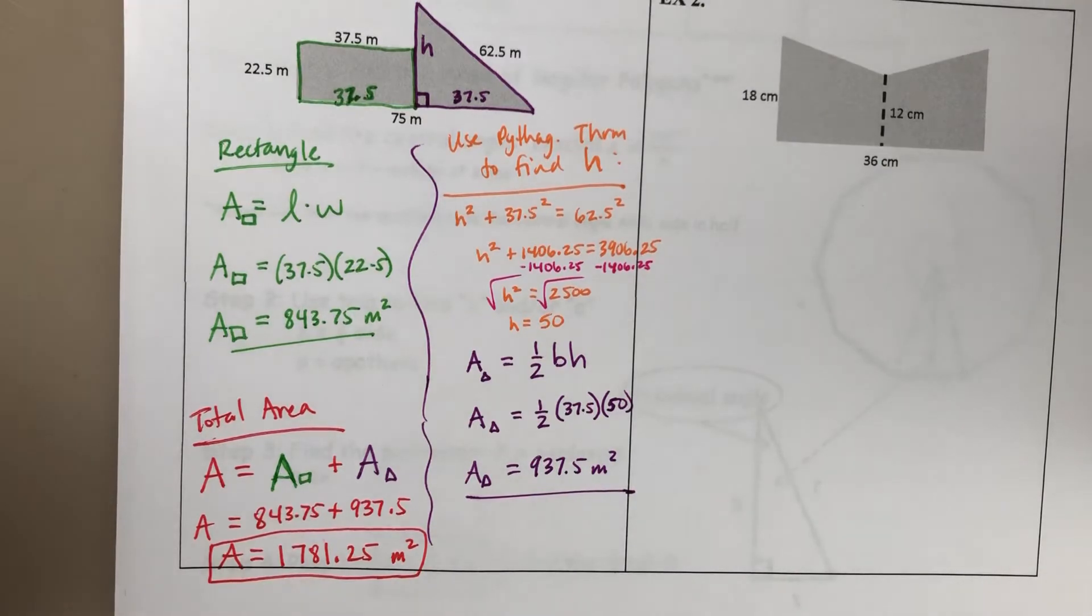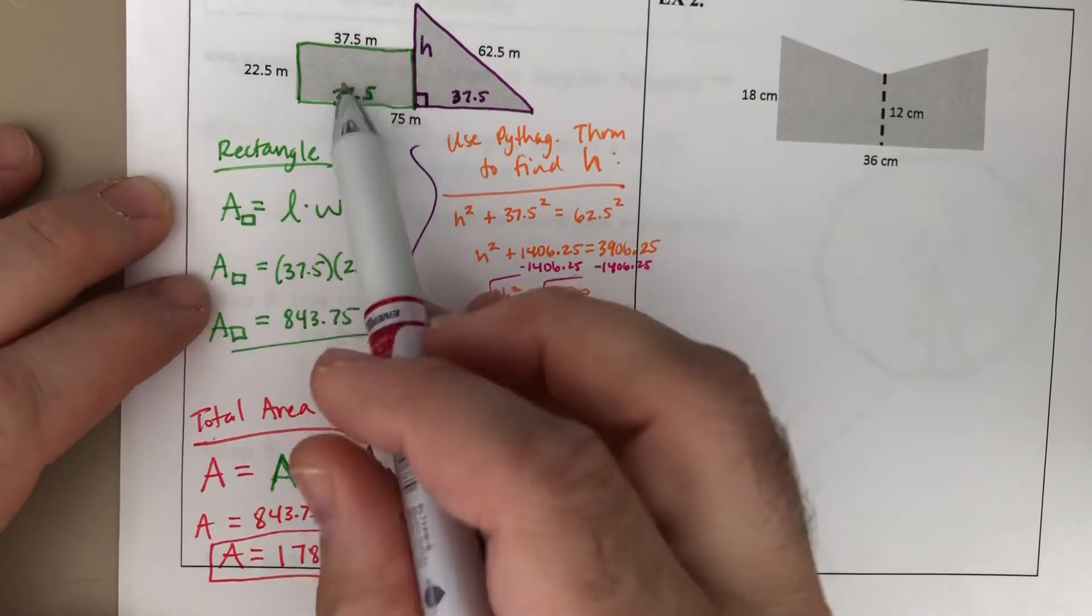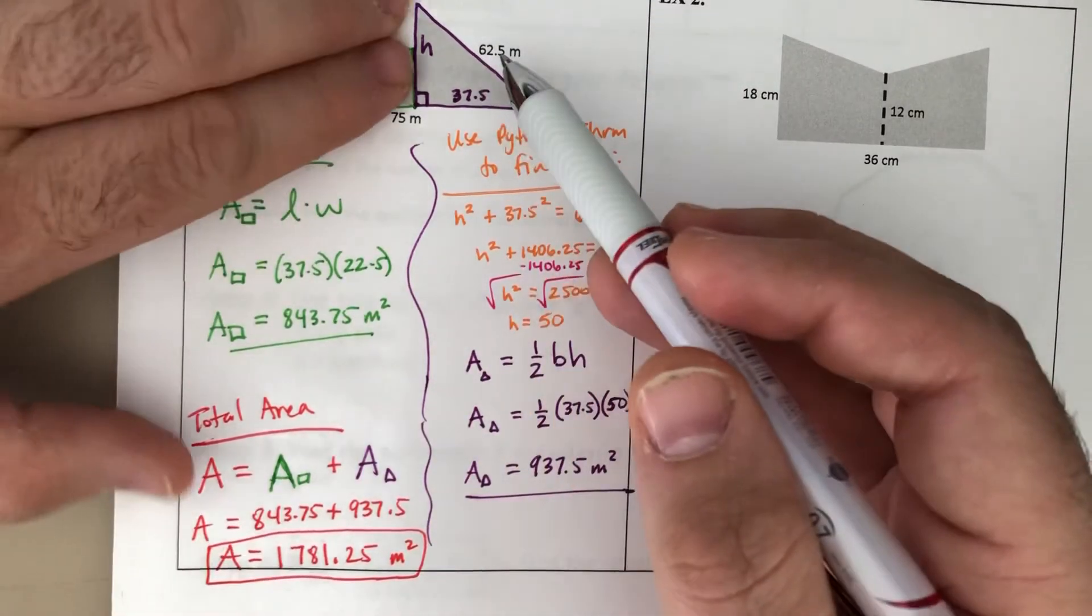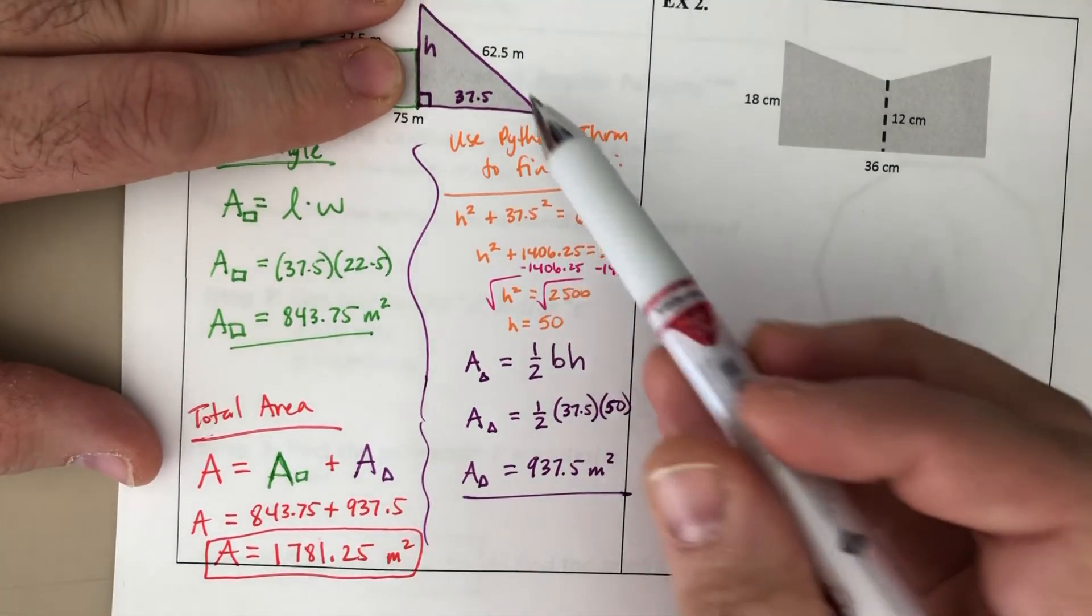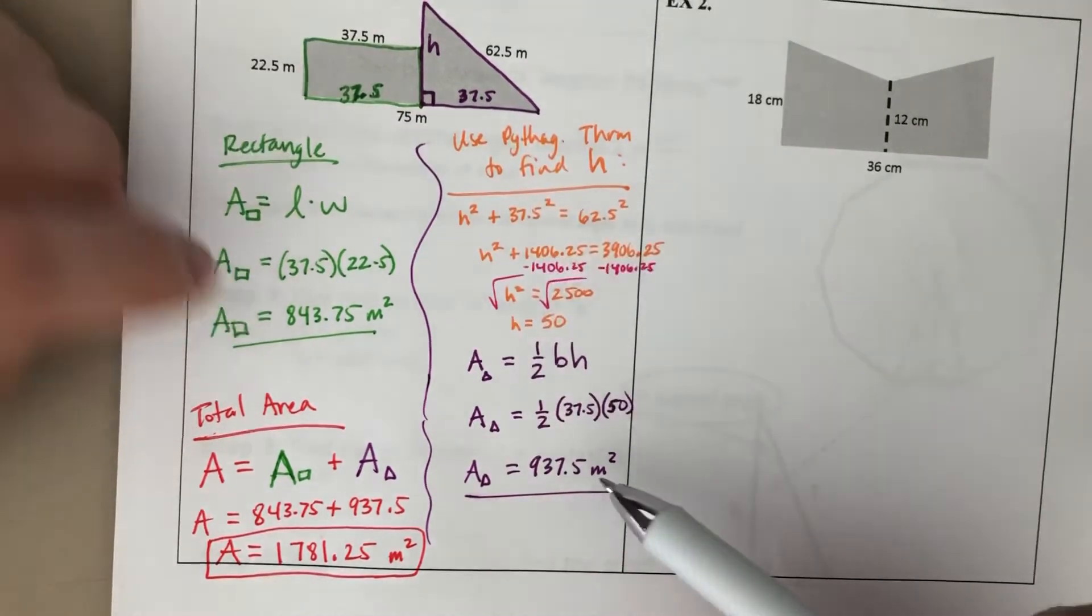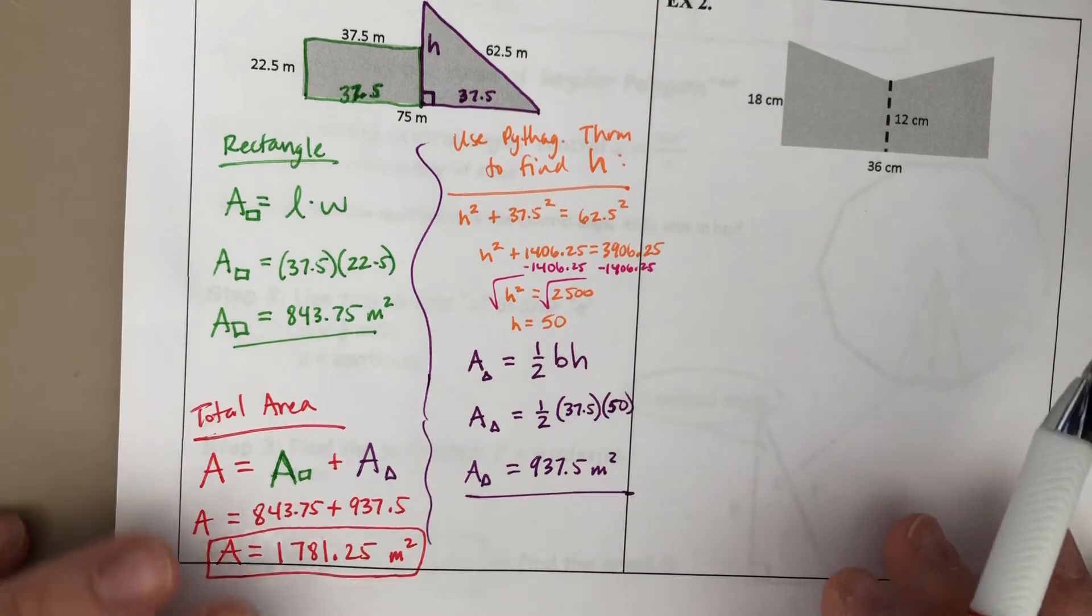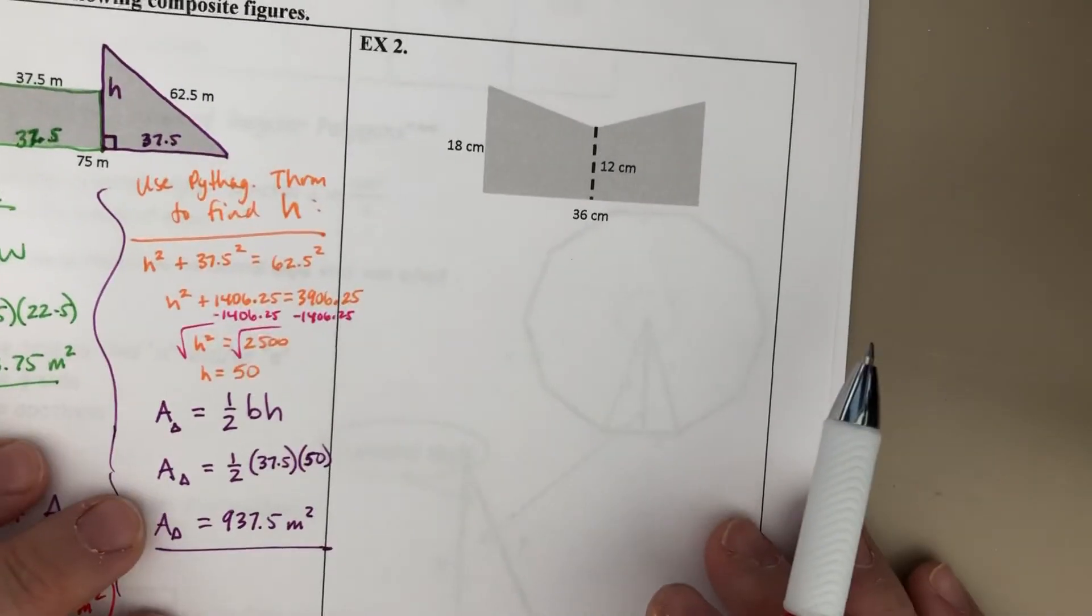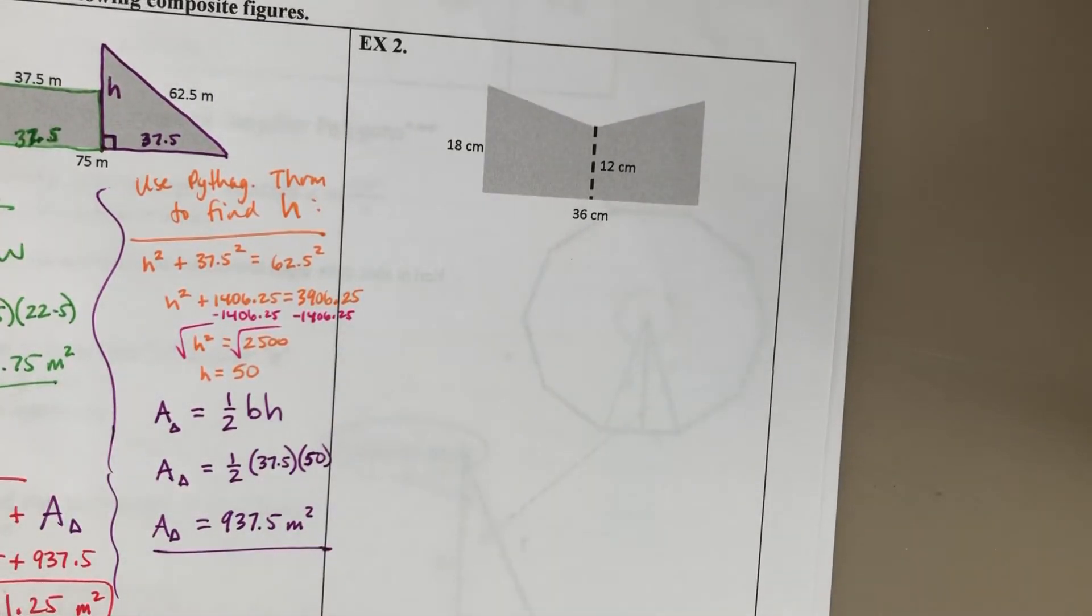So not too bad there. Again, the rectangle is nice and easy. The triangle on its own is identical to a problem we did in a previous time. And so really, it's just finding those individual areas, combining them, pretty basic. Now, example two, this one I like because there's a couple ways to approach this. And some people see it differently. And it depends on how you see it.